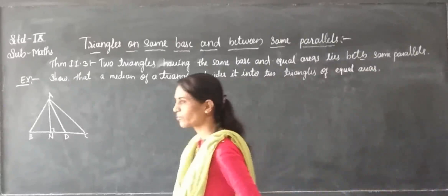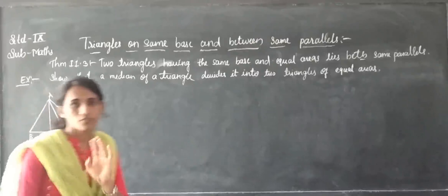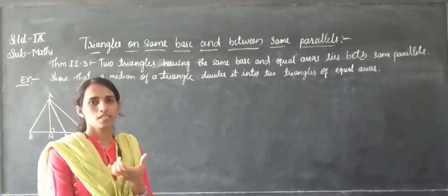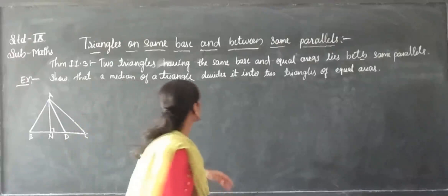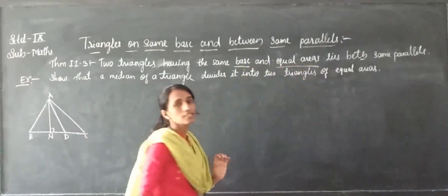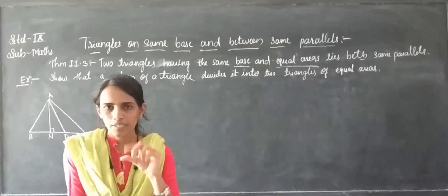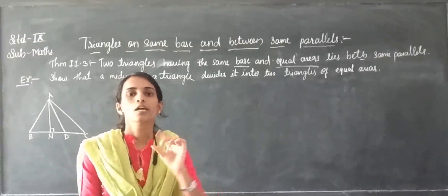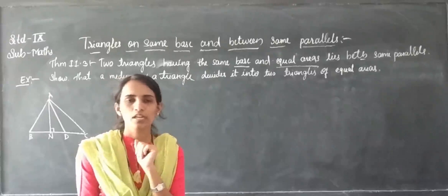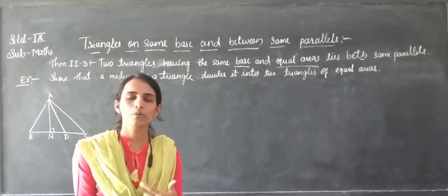To prove this theorem, you have to do the construction and you have to use the parallelism theorem. We will see examples of this theorem. Now, one more theorem — the converse, theorem 11.3. If two triangles have the same base and they are equal in area, they lie on the same parallel. Opposite also: if two triangles lie on the same base and their areas are equal, they lie between the same parallels.